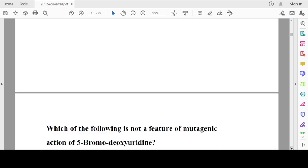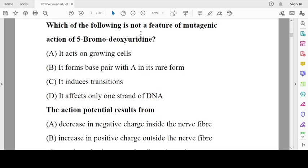Which of the following is not a feature of mutagenic action of bromodeoxyuridine? It acts on growing cells, yes. It forms a base pair with A in rare form? No, that is bromouracil, but they are asking about bromodeoxyuridine. This is the wrong answer. Bromouracil is involved in transition. Transition means one purine replaced by another purine; transversion means purine replaced by pyrimidine. Bromouracil also affects only one strand of DNA. So bromodeoxyuridine acts on growing cells, induces transition, and affects only one strand.